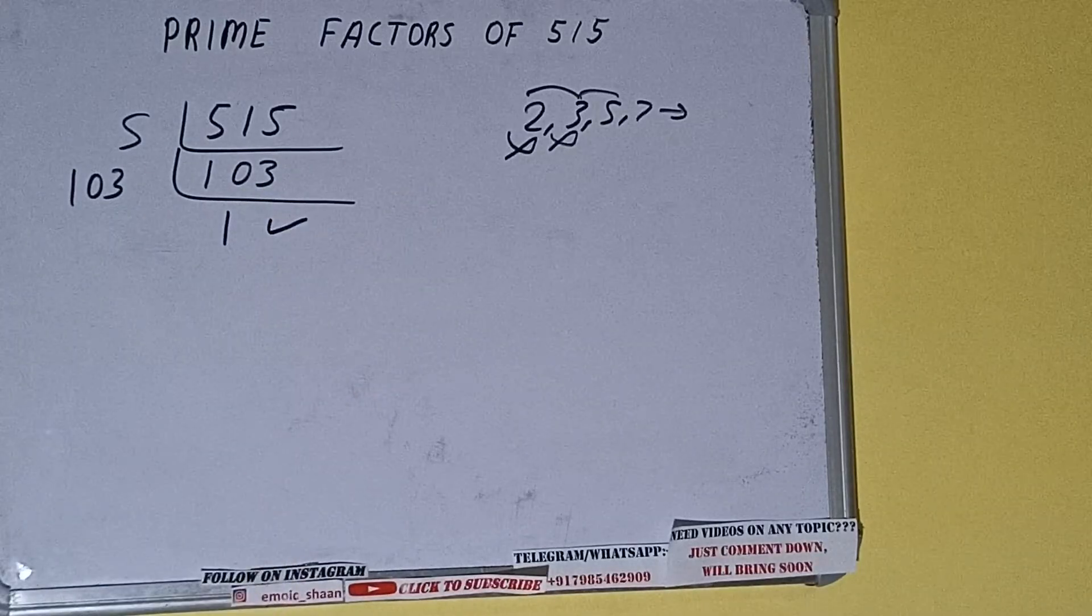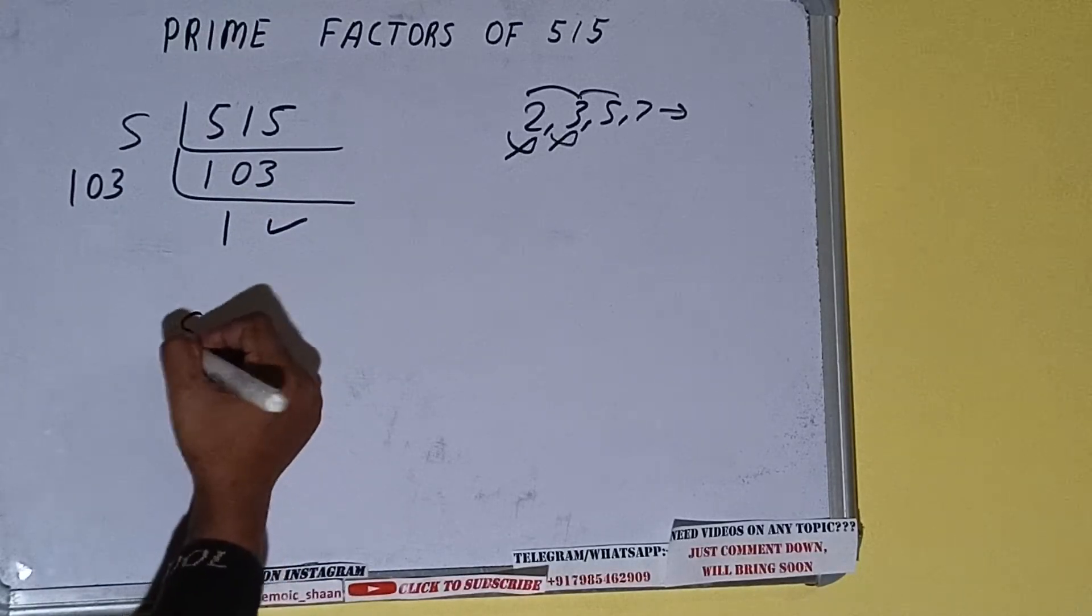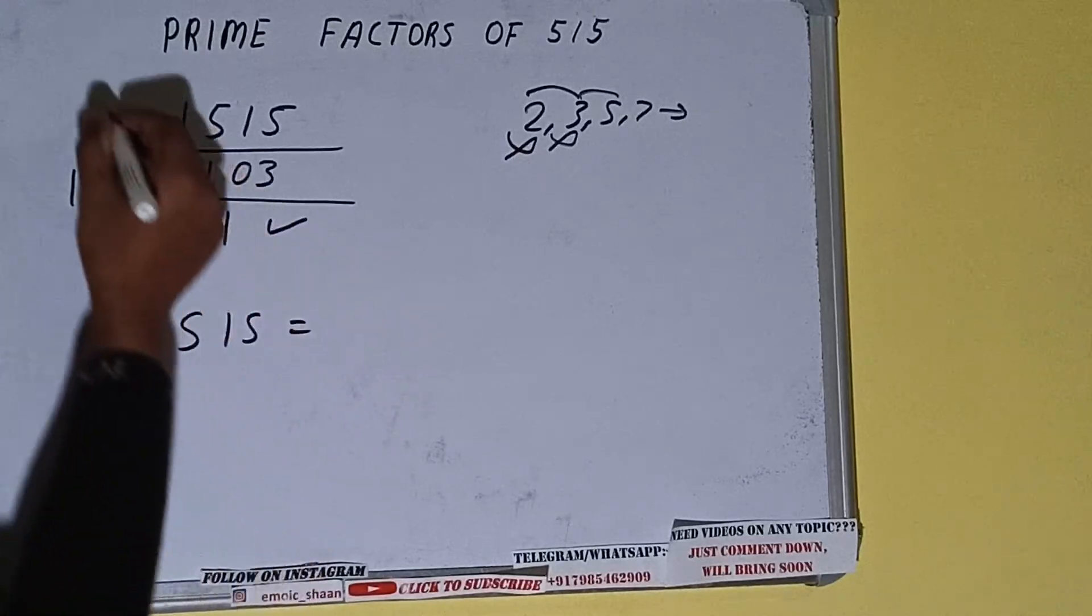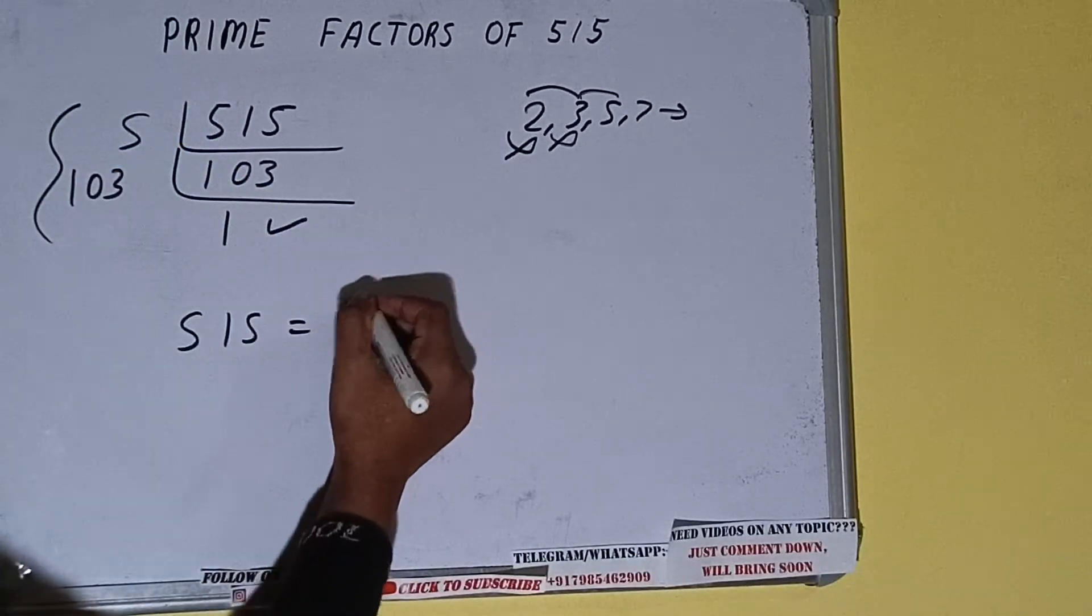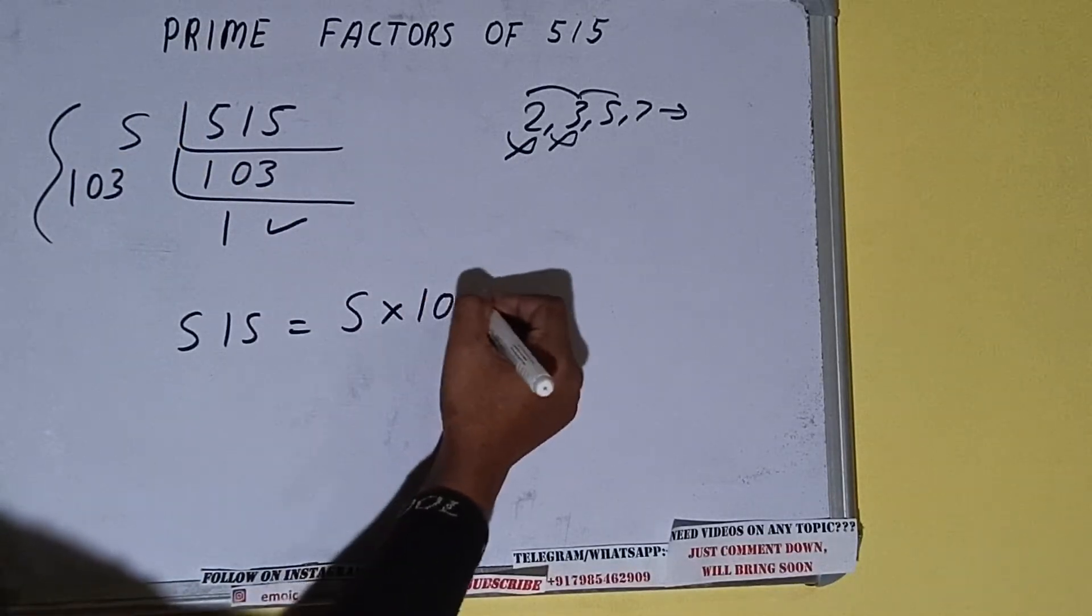And do one last thing, that is prime factors of 515 is equal to whatever we have on the left hand side, that is 5 × 103. That will be the answer.